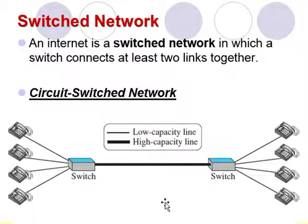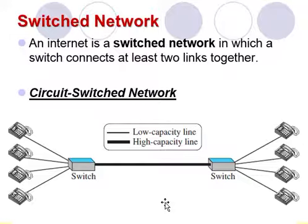The capacity can be shared between all pairs of telephone sets. The switches used in this network have forwarding tasks but no storing capability. In the first case, all telephone sets are busy — four people on one side are talking with four people on the other side, and the capacity of the thick line is fully used.